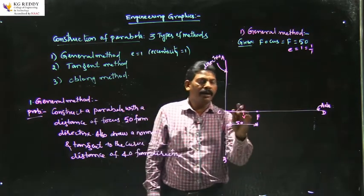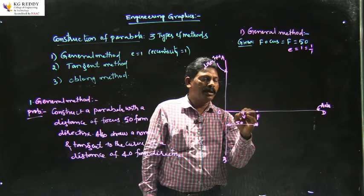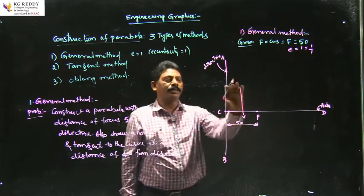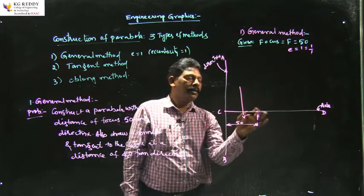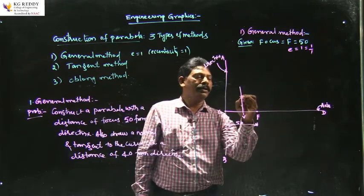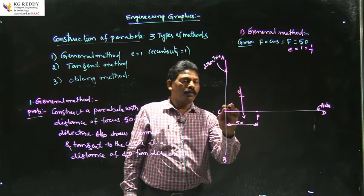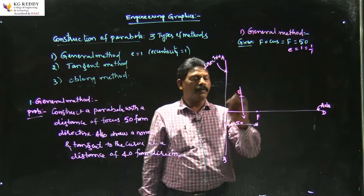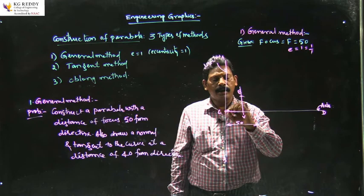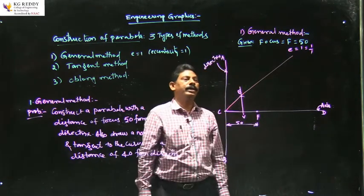From V, draw a line perpendicular to CF for some distance. Then, with VF as the radius and V as the center, draw an arc — this point is labeled E. Now join C to E and extend the line.